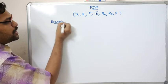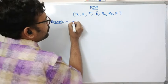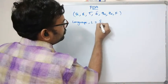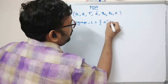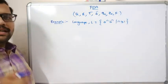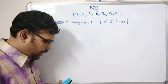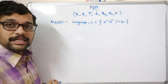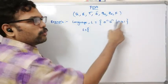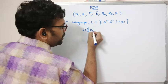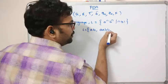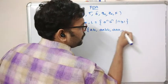We need to construct the PDA for the language L = aⁿbⁿ where n ≥ 1. Let us first write down the strings for this language. When n = 1 the result is 'ab', when n = 2 it is 'aabb', when n = 3 it is 'aaabbb', and so on.